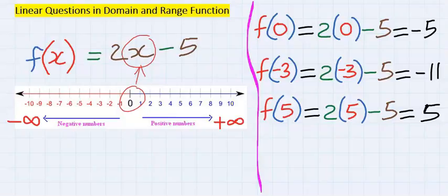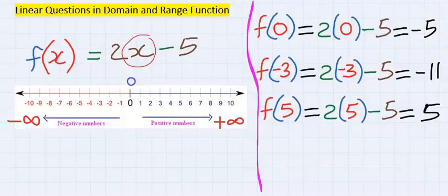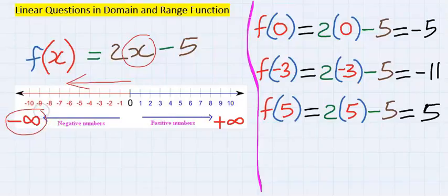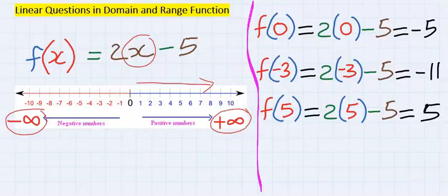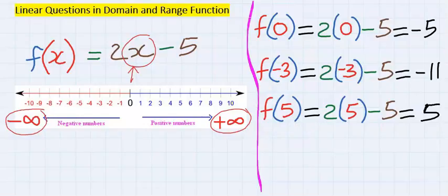We tried zero for x — no problem. We tried negative integers going towards negative infinity, and positive integers going towards positive infinity, all for the x value which is the domain. There were no restrictions. So how do we represent our answer?